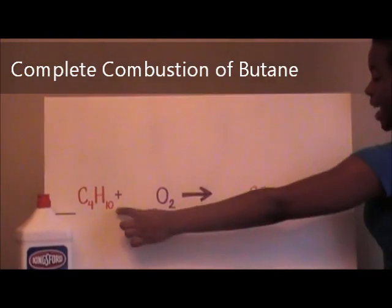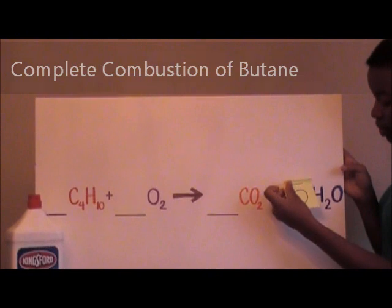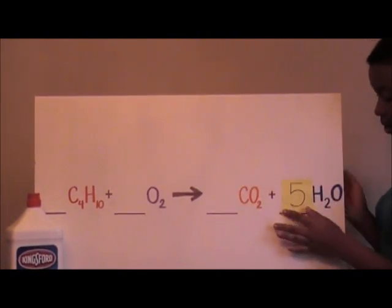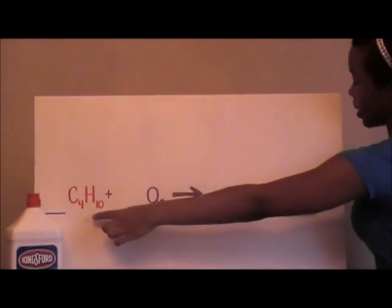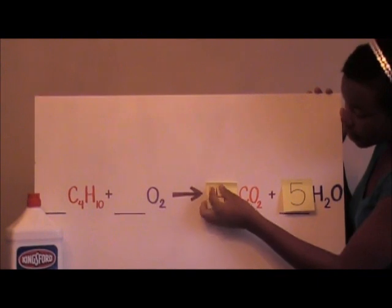One molecule of butane has 10 hydrogens, so it will yield 5 molecules of water with 2 hydrogens each. Butane also has 4 carbons, so it can yield 4 molecules of carbon dioxide.